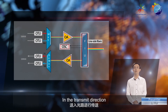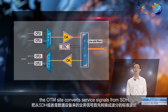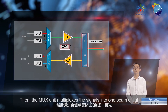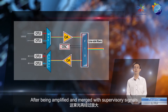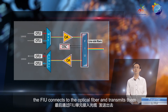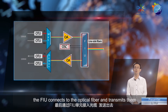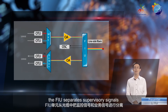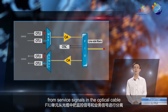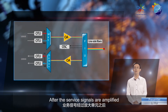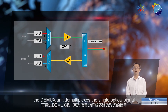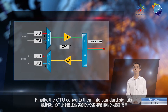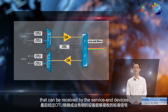In the transmit direction, the OTM site converts service signals from SDH or datacom devices into standard WDM wavelengths. Then the MUX unit multiplexes the signals into one beam of light. After being amplified and merged with supervisory signals, the FIU connects to the optical fiber and transmits them. In the receive direction, the FIU separates supervisory signals from service signals in the optical cable. After the service signals are amplified, the DMUX unit demultiplexes the single optical signal into multiple colored optical signals. Finally, the OTU converts them into standard signals that can be received by the service end devices.